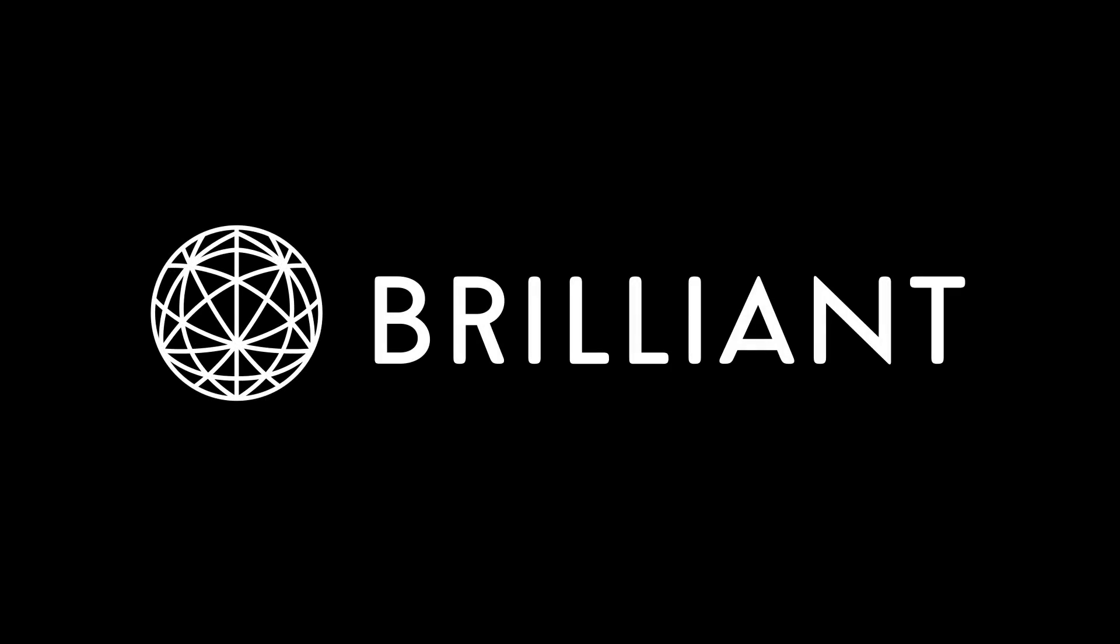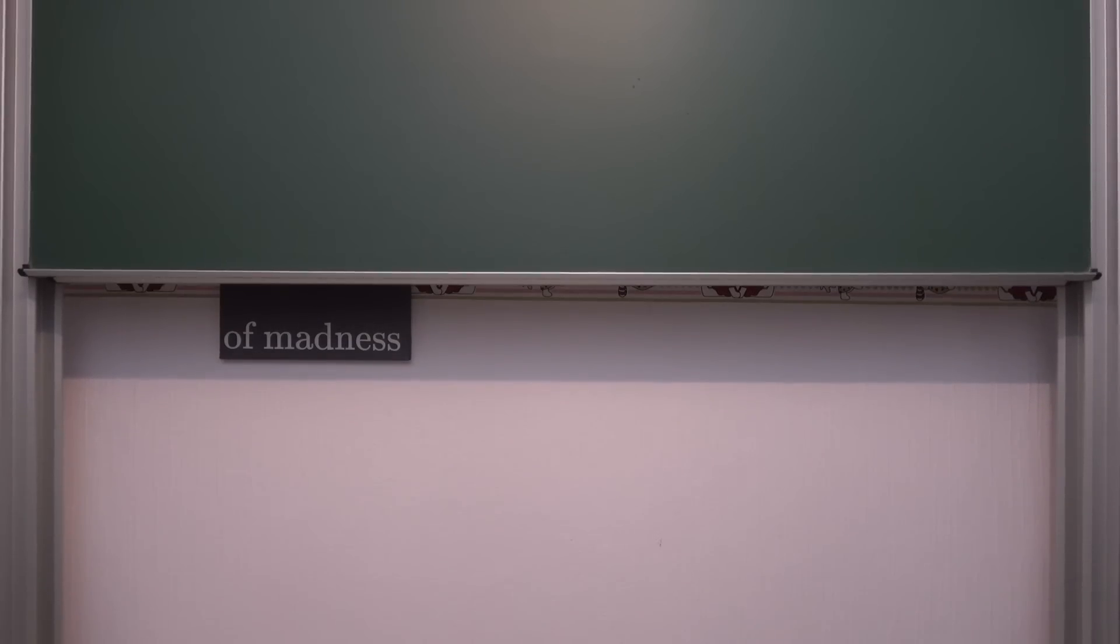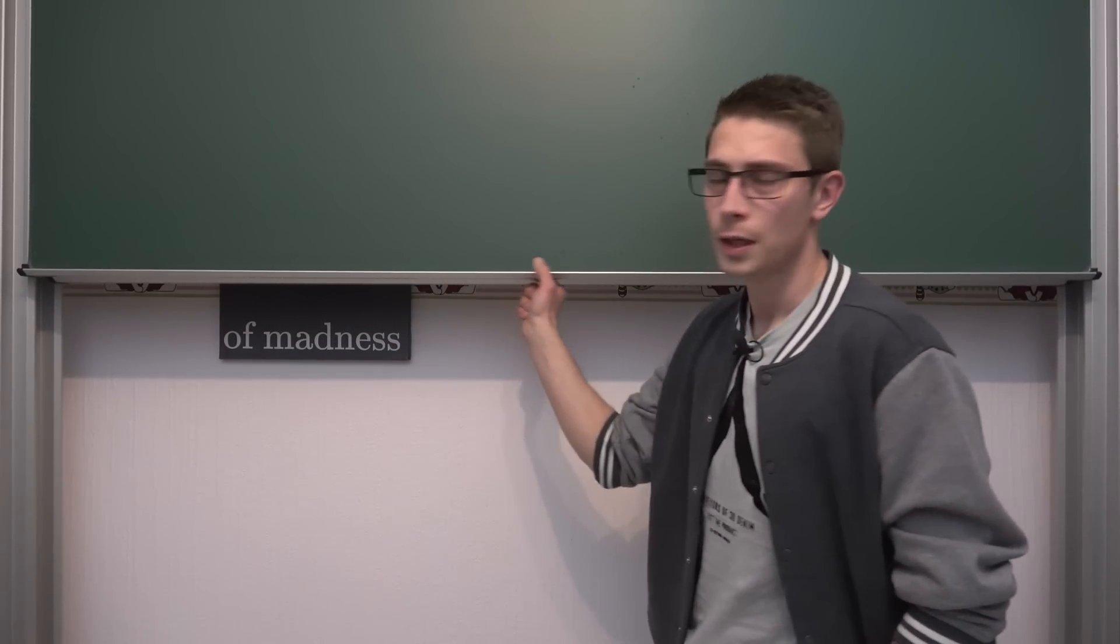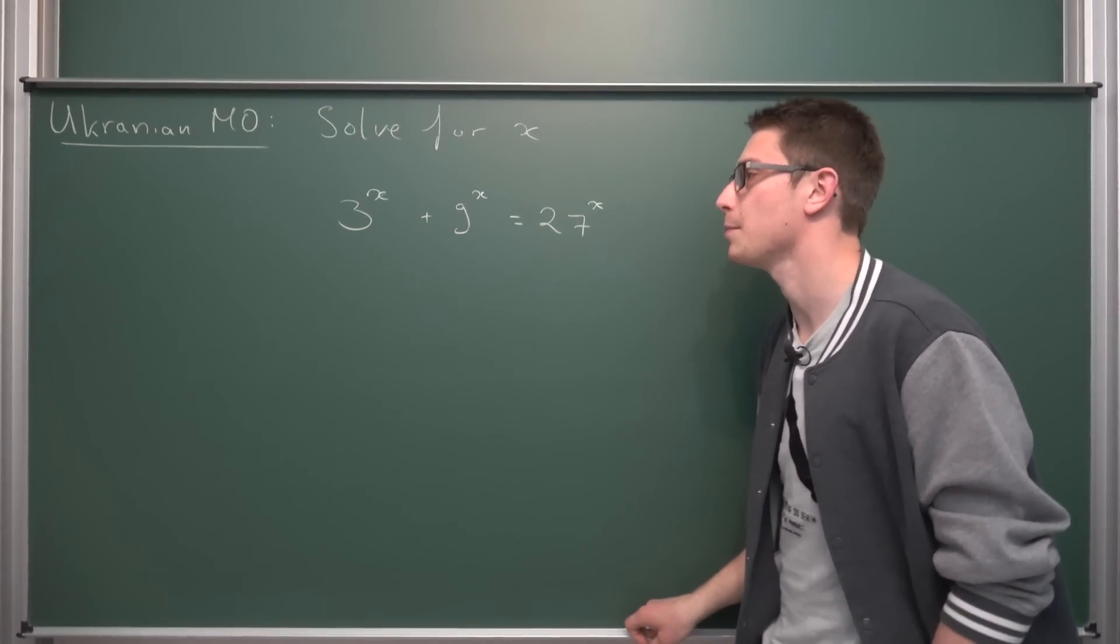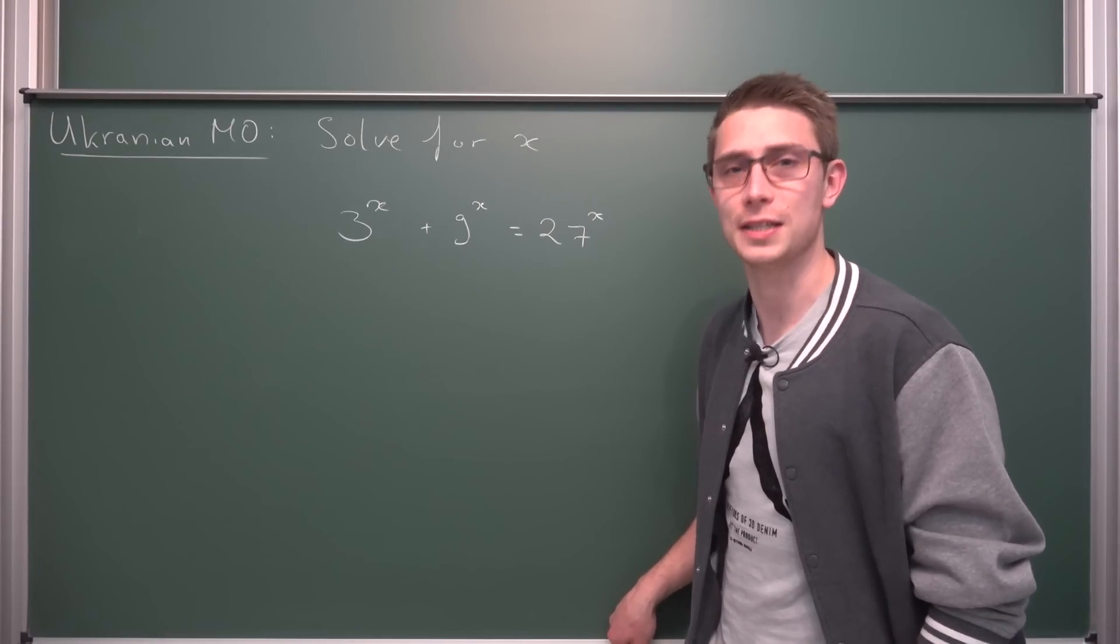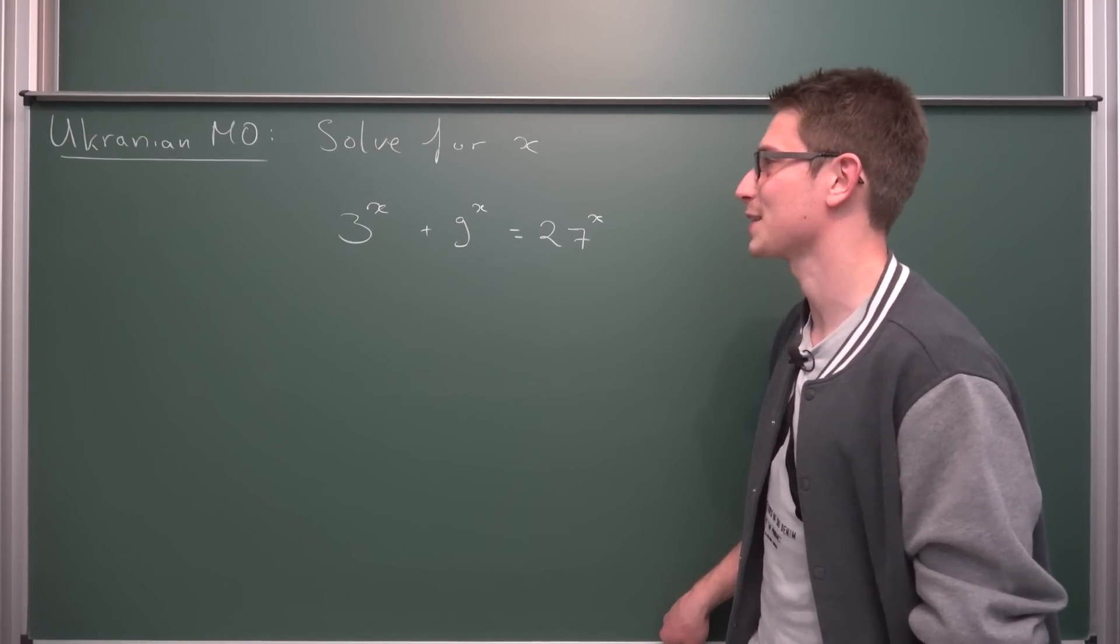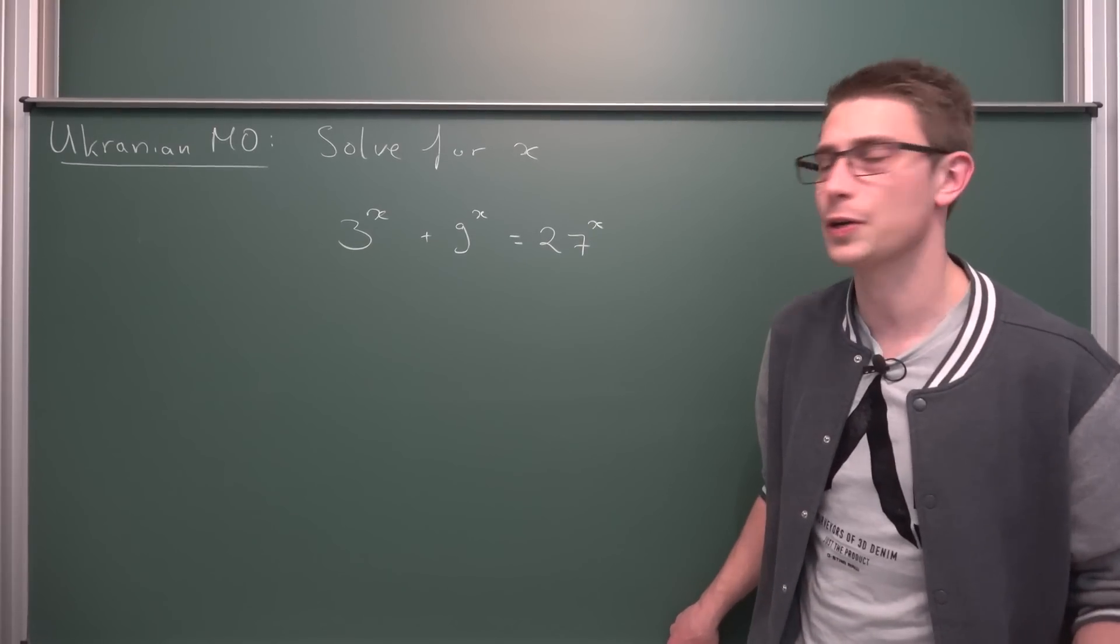A huge thanks to Brilliant for sponsoring this video. Today, a short but very fun one from the Ukrainian Maths Olympiad with an incredibly satisfying solution. Spoiler, it's the number 69,420. I love problems of this kind. They are amazing and very nice to present and it makes for a very great surprise.